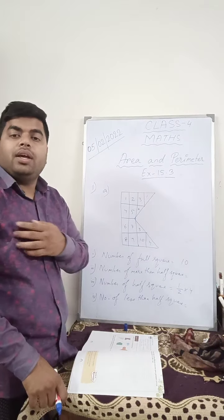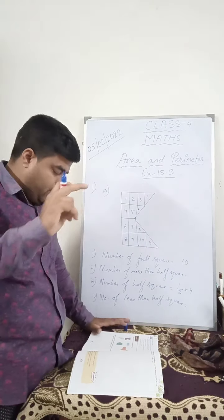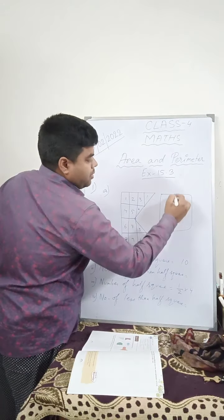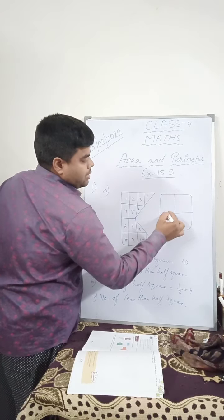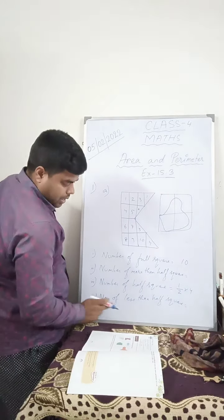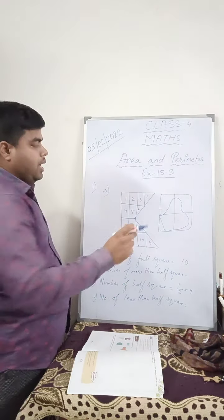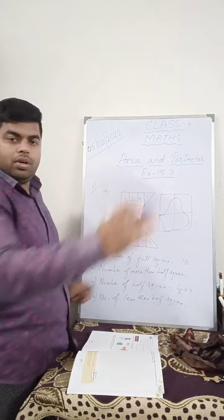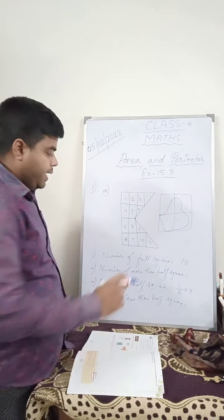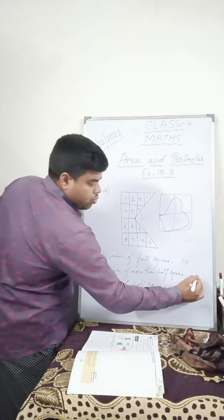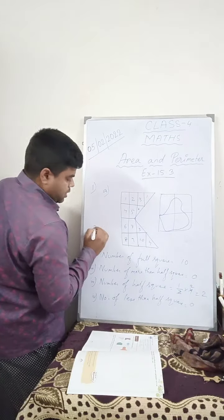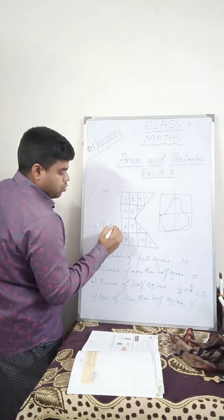And more than half square means, if you see, like for example question number C, you'll see curved line. If the square is covered less than half, you will consider as number of less than half square. And if it covers more than half of the box, then you'll count here, number of more than half square. So here you don't have more than half square or less than half square. So these two will be 0. And half multiplied by 4 will be 2. So your answer is 12, 10 plus 2, 12 square units.